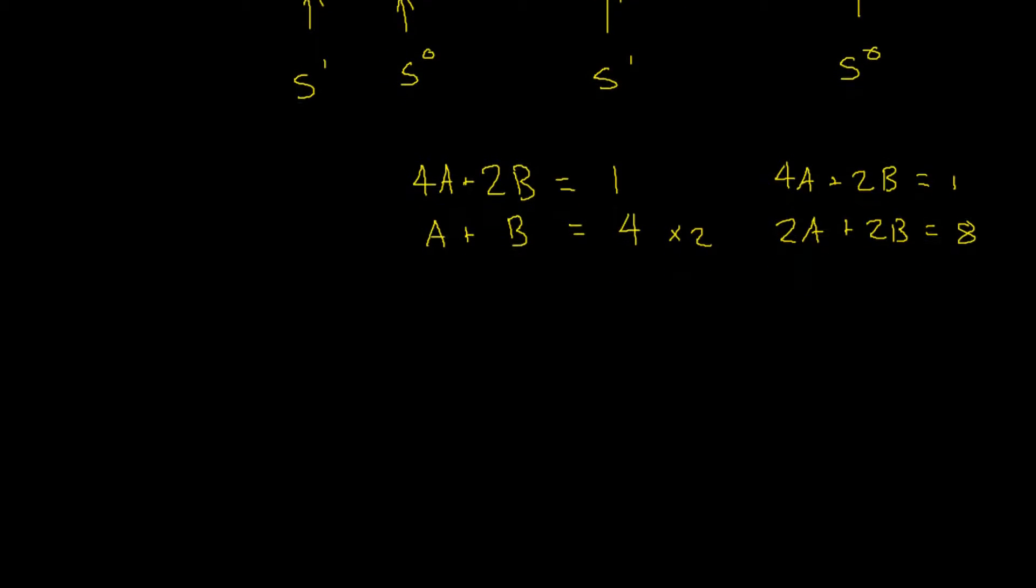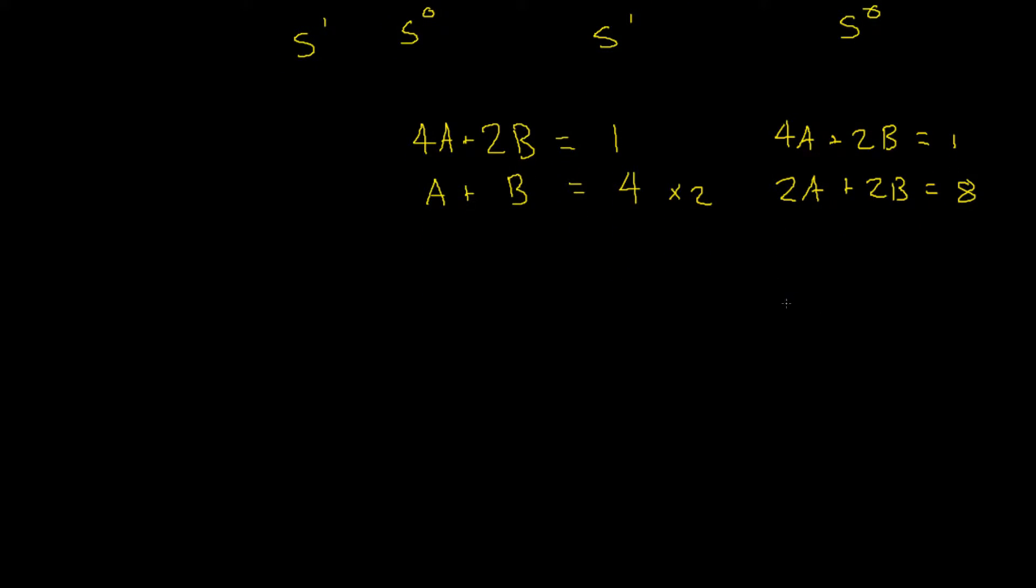We can then subtract the second equation from the first, which would give us 2A plus 0B equals negative 7. Then we can divide through by 2, which would give us A equals negative 7 over 2.